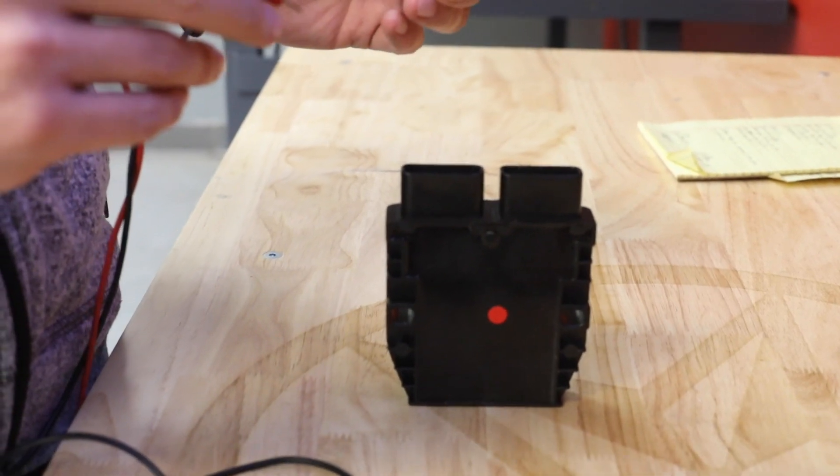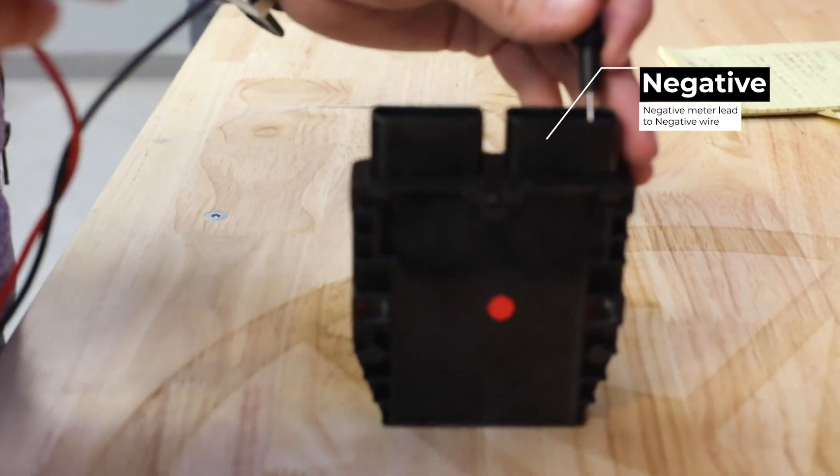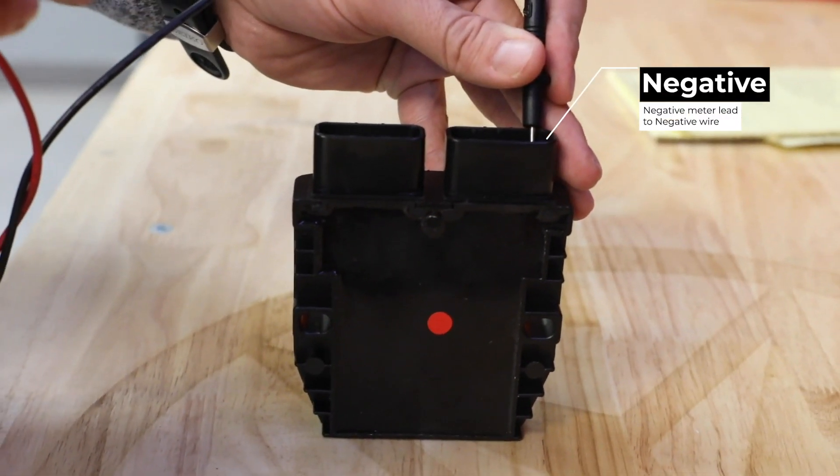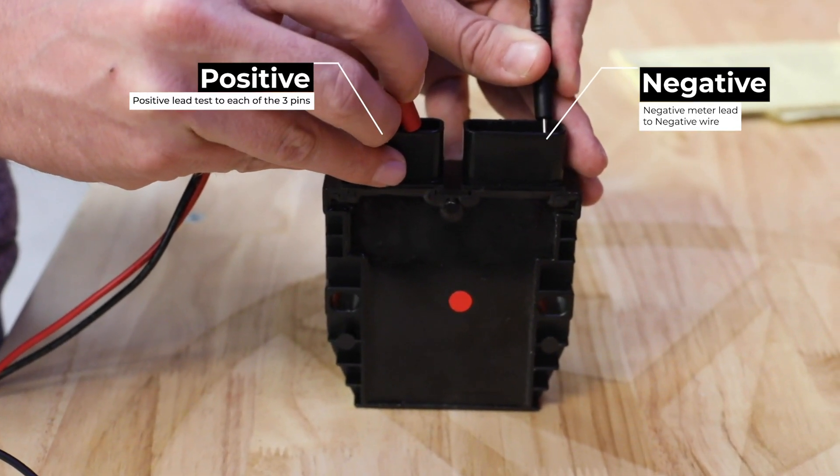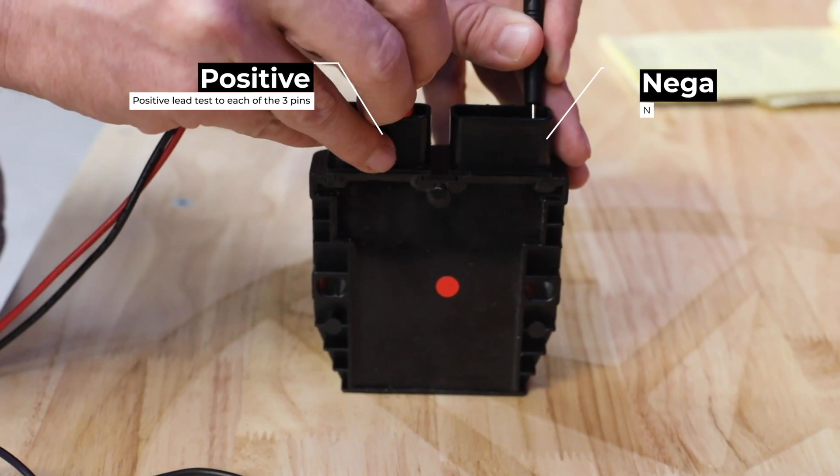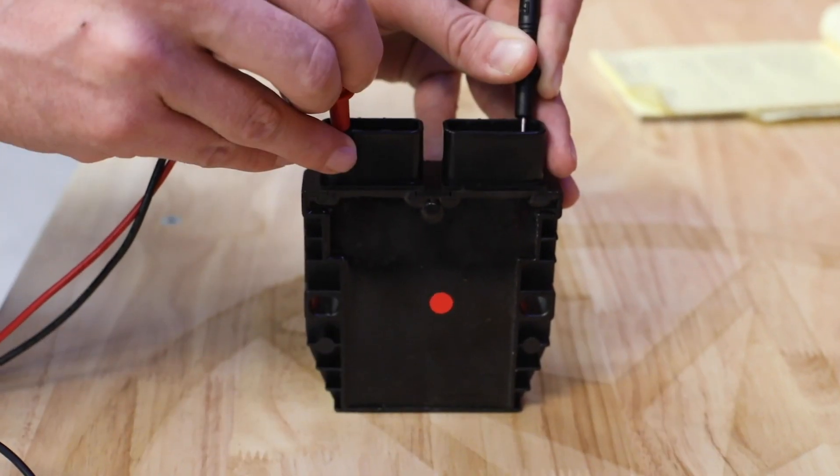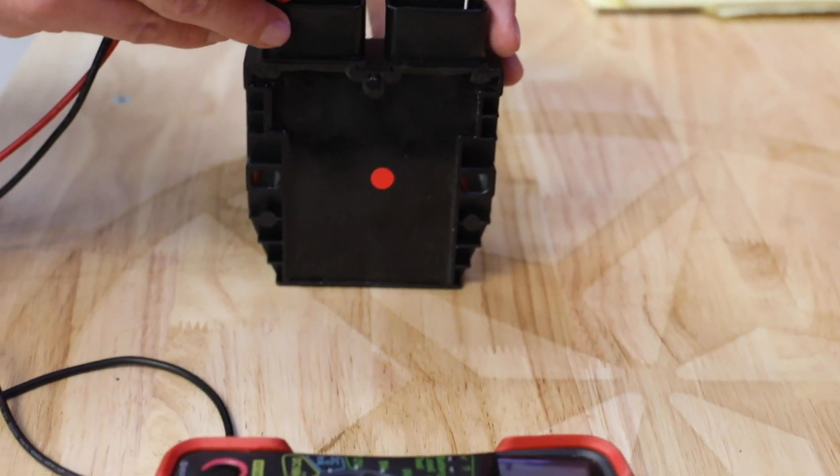We're going to connect our negative lead to our negative wire on the regulator and then we'll go across all our three pins here. All right, we're reading OL there so that's good.